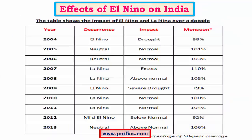Looking at El Niño effects on India, years like 2004 which were El Niño years are associated with drought. La Niña is the exact opposite, associated with above-normal rainfall. A comparison table shows how rainfall changes with El Niño. In certain years, however, the El Niño effect is moderated by the concept of the Indian Ocean Dipole.